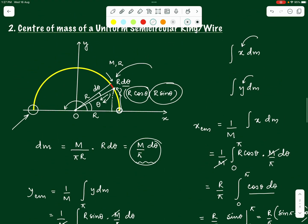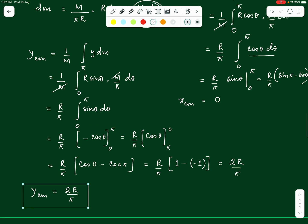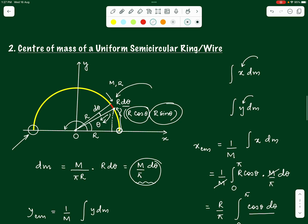The y-coordinate of the center of mass is 2r/π, which is slightly less than r since 2/π < 1 (π ≈ 3.14). So the center of mass lies on the y-axis at a distance of 2r/π from the origin — somewhere inside the half ring. This is an important standard result, and we shall be using it to find the center of mass of a uniform semi-circular disc in the next exercise.